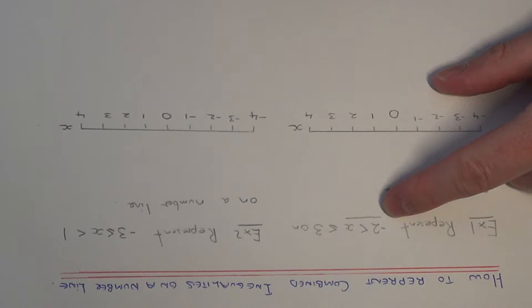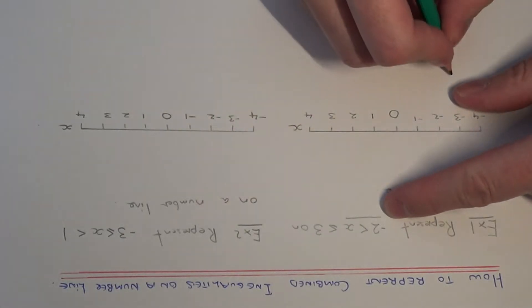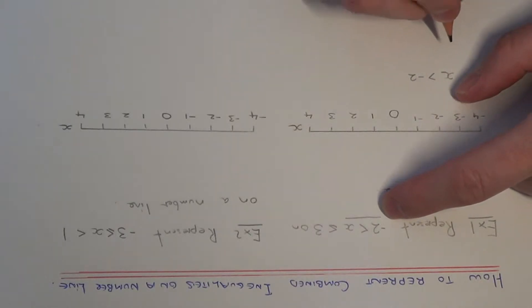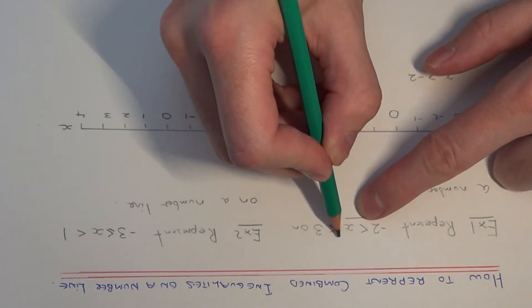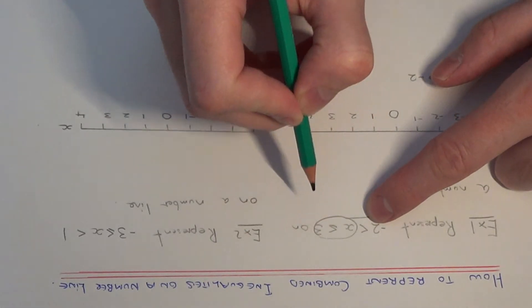What we need to do then is write this the other way around as x is more than minus 2. And then the other bit of our inequality is that x has to be less than or equal to 3.